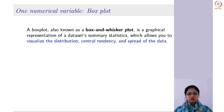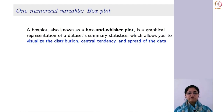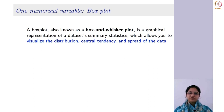Next, we move on to the box plot. We have seen a dot plot, then we understood the histogram, and now we will see what is a box and whisker plot. A box and whisker plot is a graphical representation of a dataset's summary statistics, which allows you to visualize the distribution. You can talk about central tendency in terms of the median and the spread of the data in terms of the IQR. You can also identify outliers from this box plot.